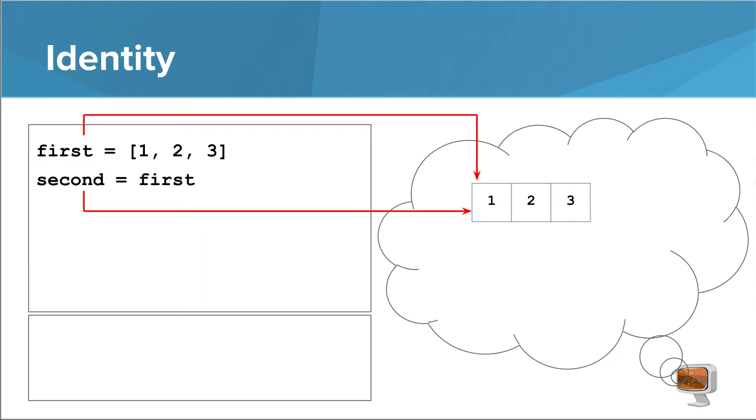Now let's look at this slightly different program. Instead of assigning another list to the variable second, we just assign the value of first. This actually has pretty important implications. The equals equals operator behaves the same way in this case. It decides that first and second are equivalent.